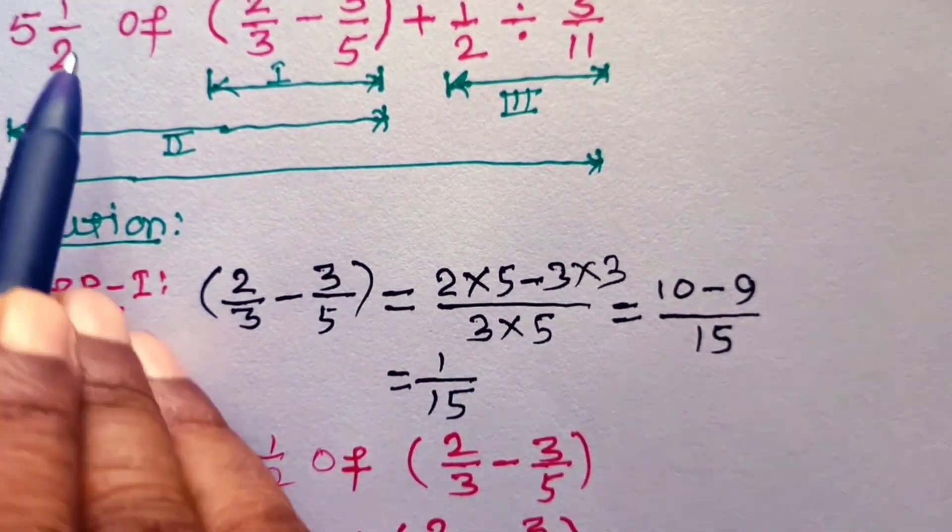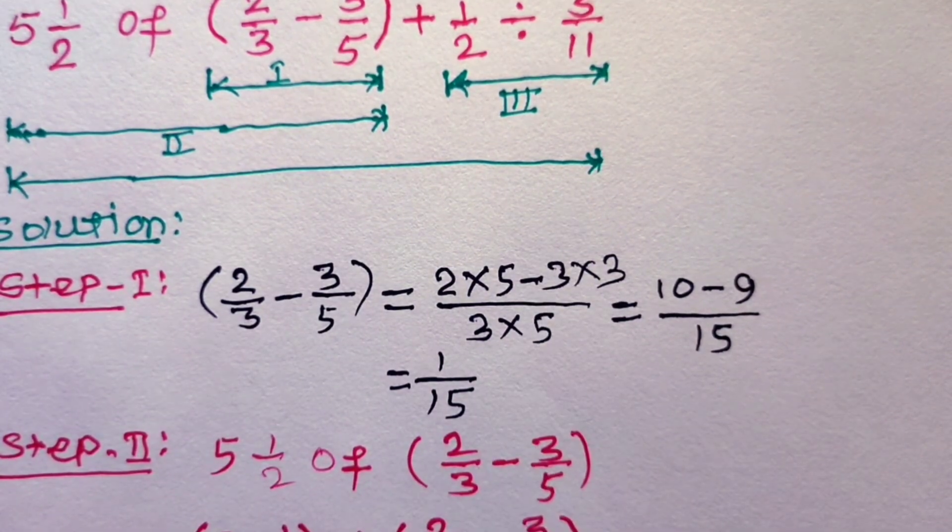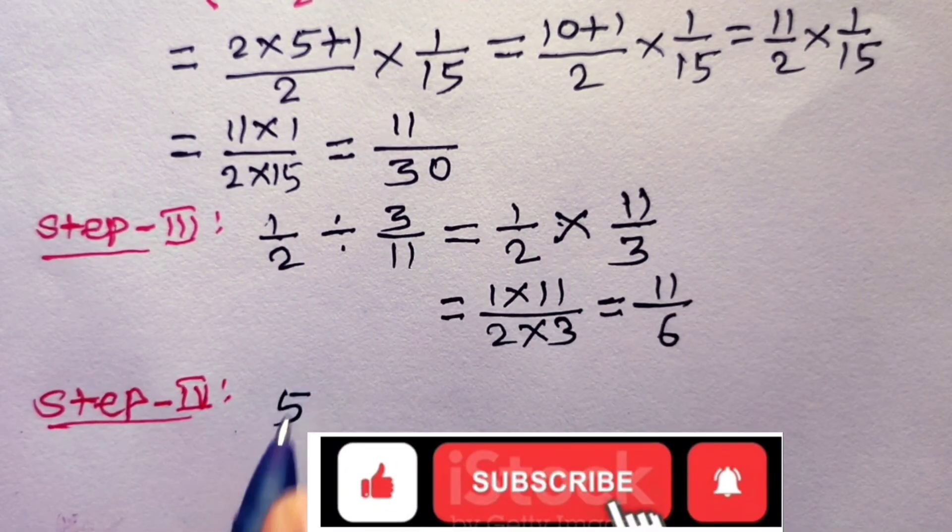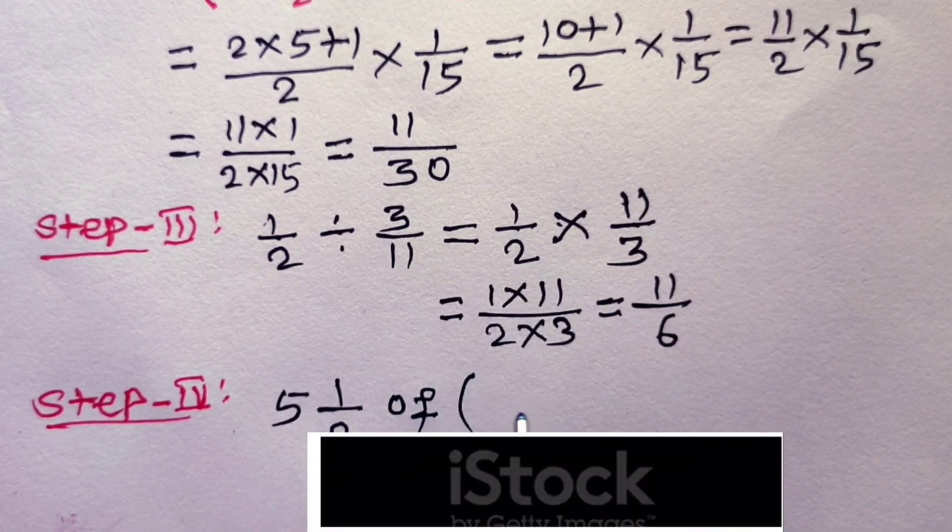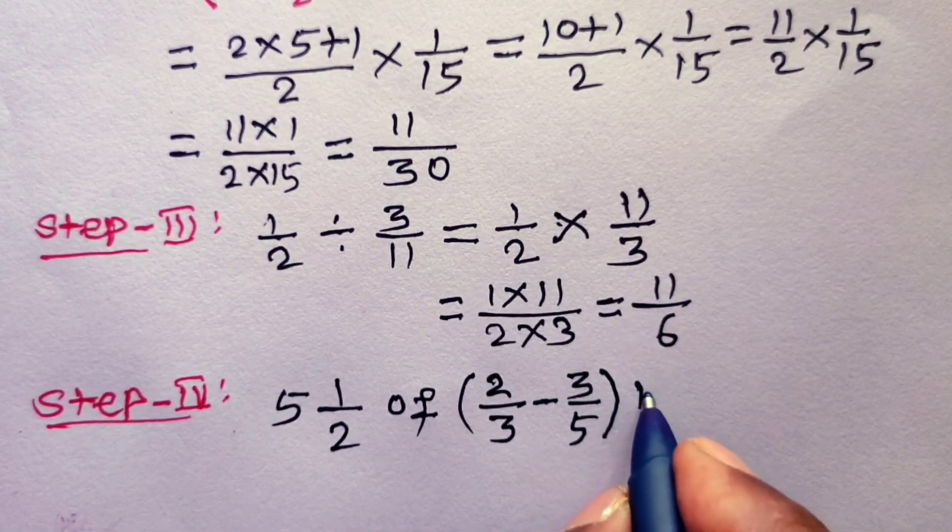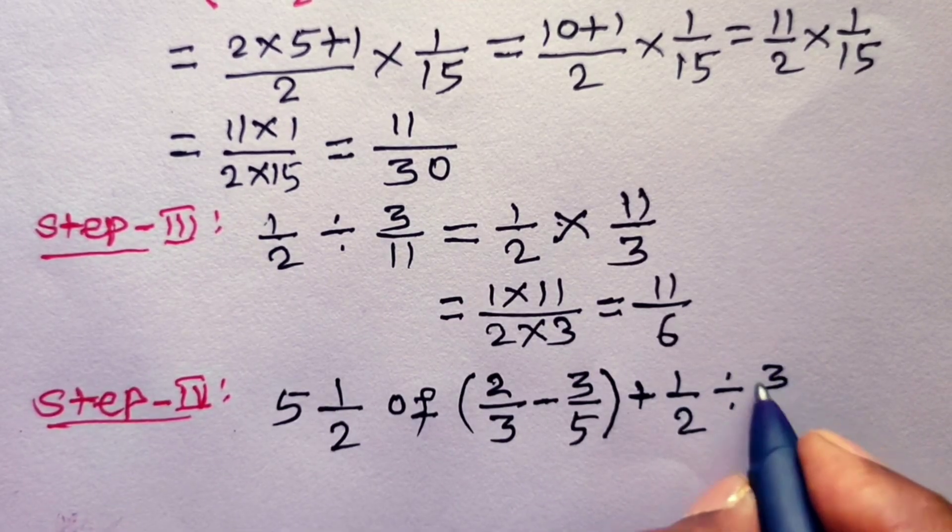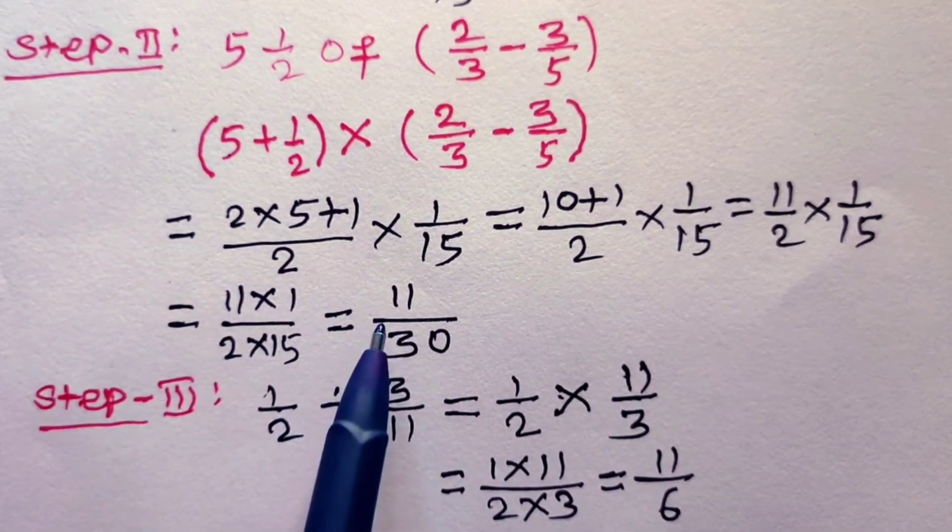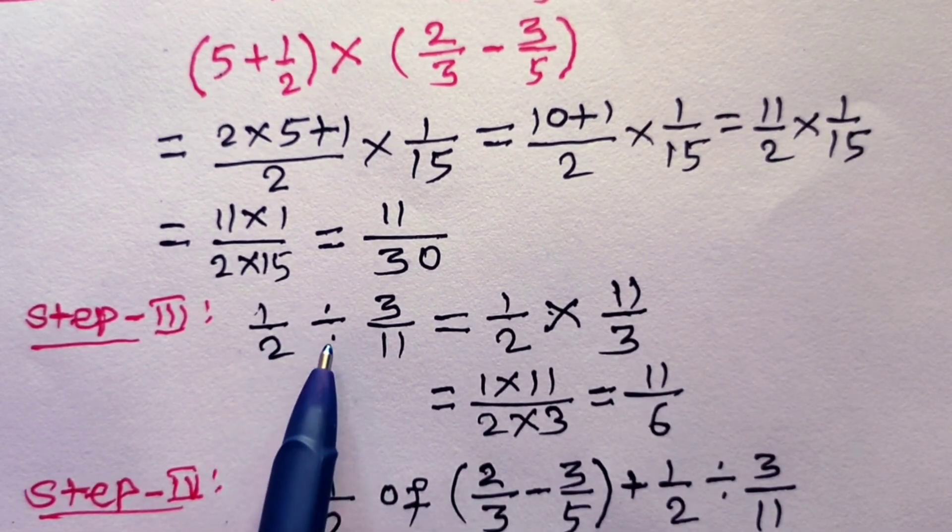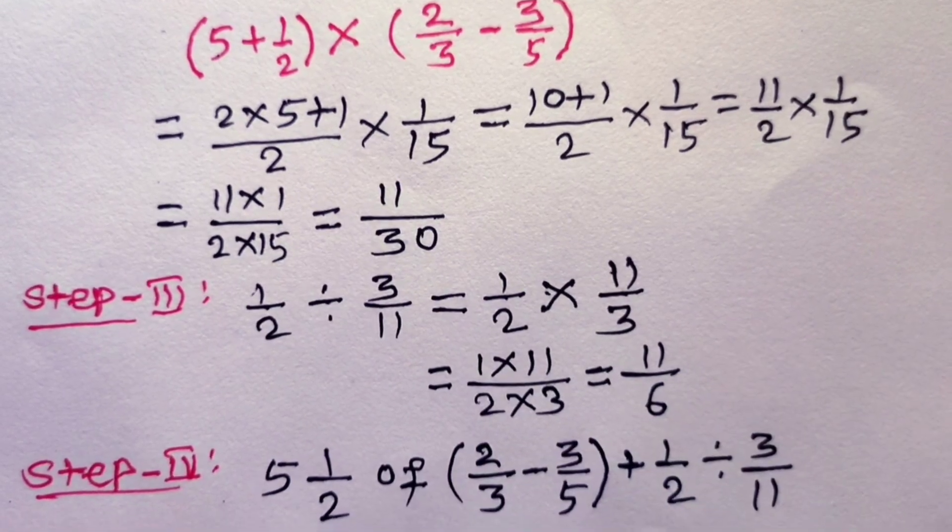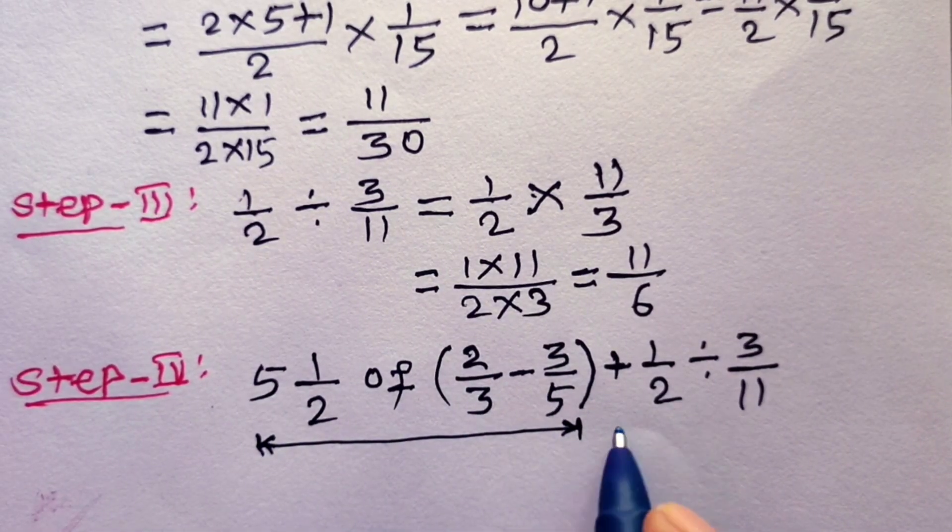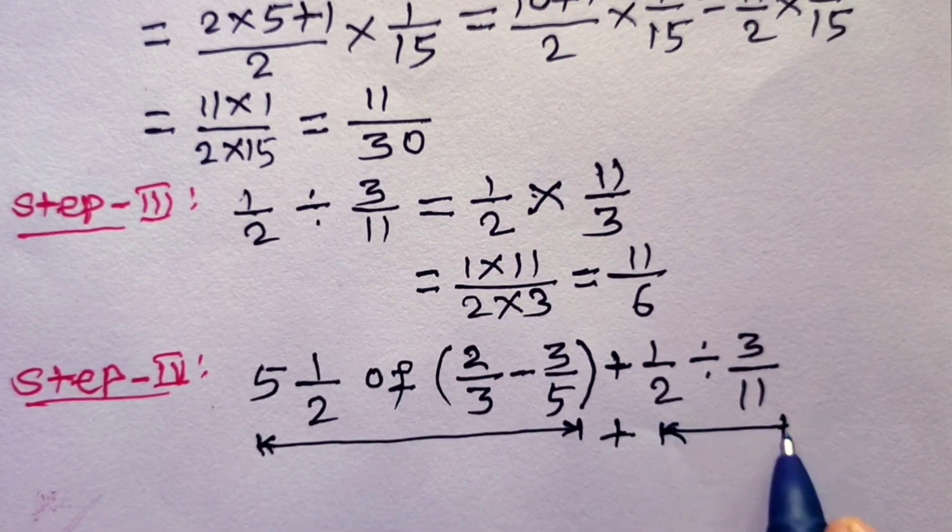Now step number 4 is the whole mathematical expression. Step number 4: 5 and half of (2/3 - 3/5) plus half divided by 3/11. From step number 2, value of this mathematical expression is 11/30. And from step number 3, value of half divided by 3/11 is 11/6. We can write value of this part of mathematical expression plus value of this part of mathematical expression. Value of this part is 11/30.